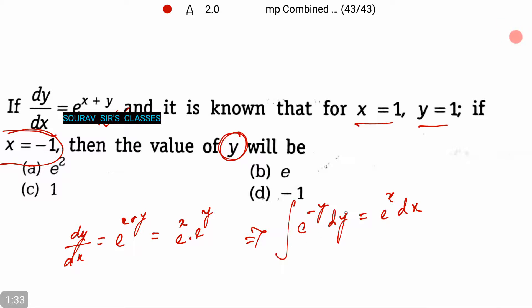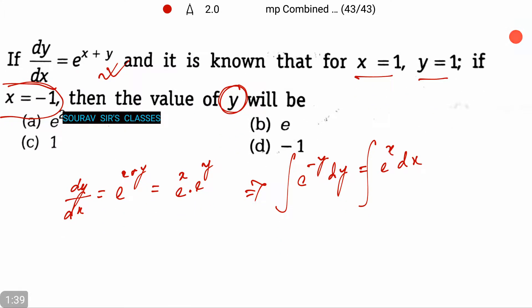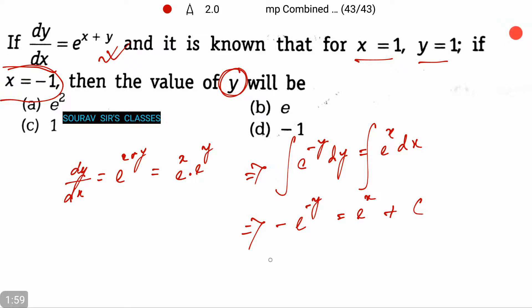Now, if we integrate both sides, we have the equation: minus e to the power minus y is equal to e to the power x plus the integration constant c. So we have e to the power x plus e to the power minus y plus c equals 0.